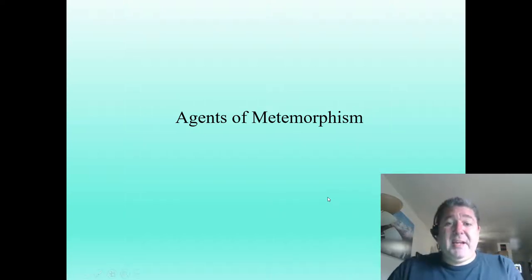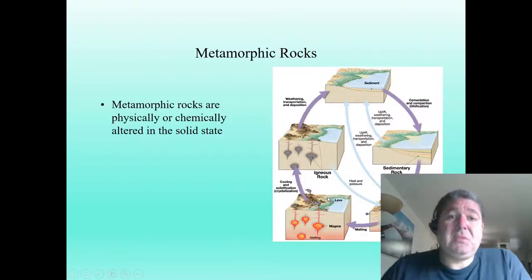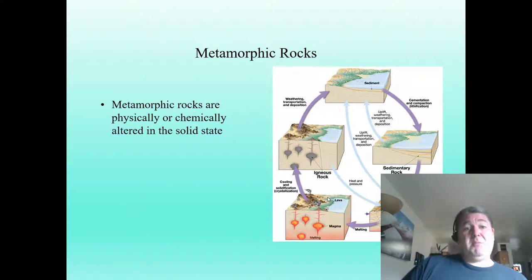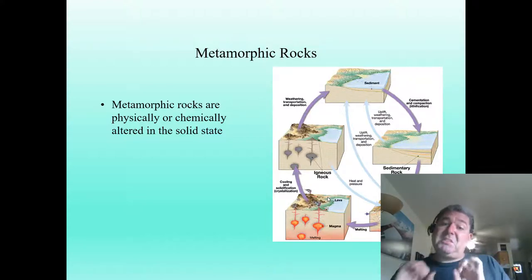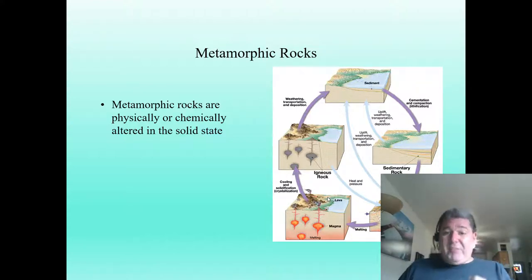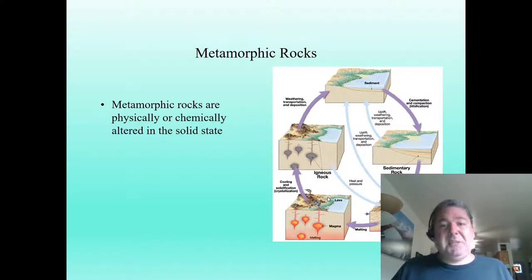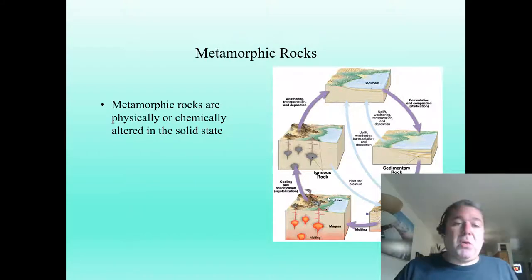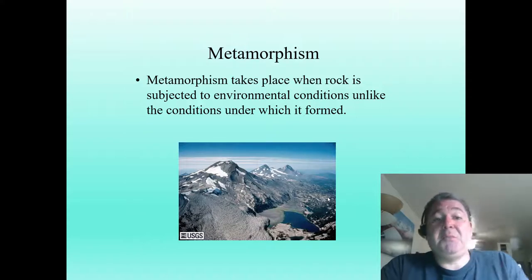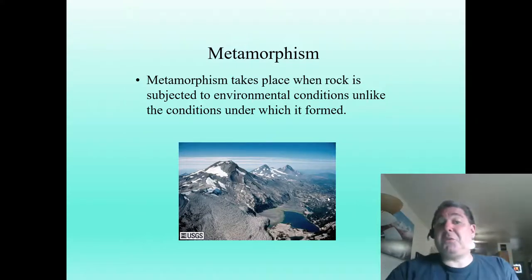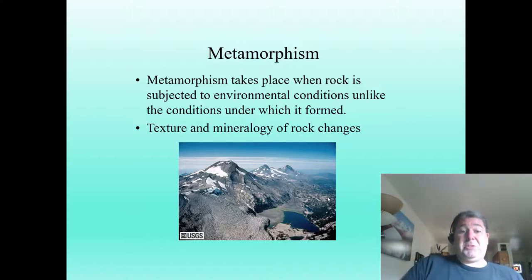Hi folks, this video is all about the different agents of metamorphism. First of all, what is a metamorphic rock? A metamorphic rock is a rock that is physically or chemically altered, but in the solid state. Think more of like taffy - heating it up but not melting it. If you melt it, you become an igneous rock again. Metamorphism takes place when the rock is subject to environments in which it's not very happy - conditions under which it didn't form, especially heat and pressure.